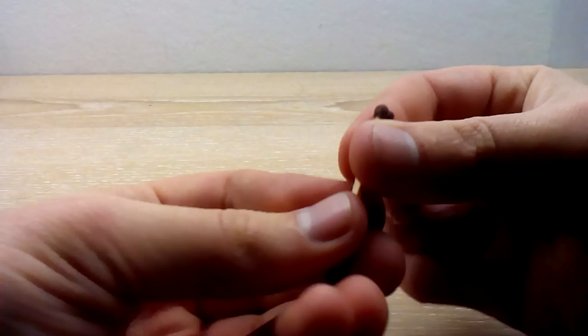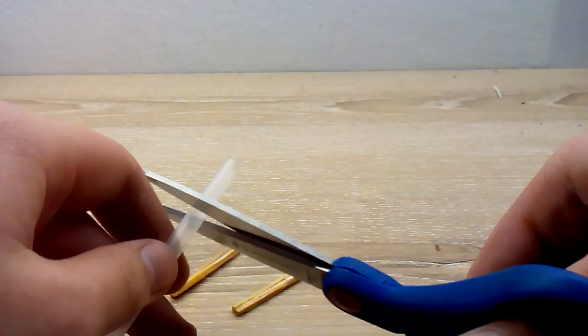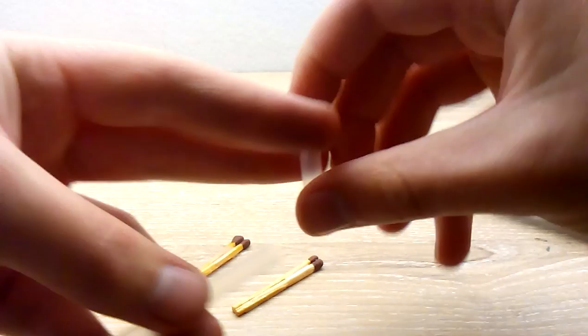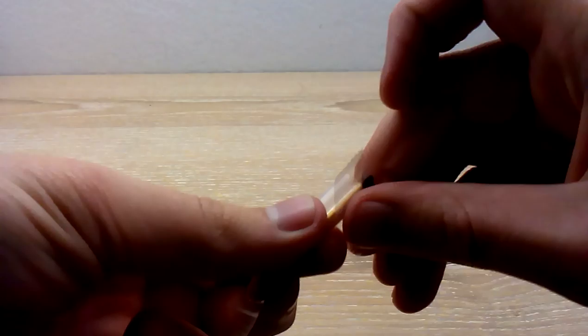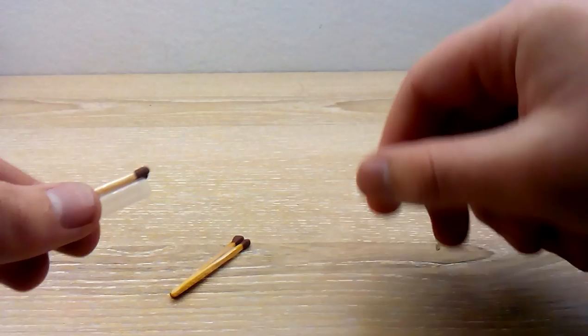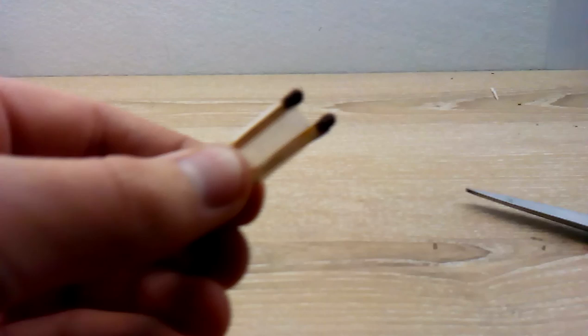Next, you cut a short length of straw, maybe between one and two centimeters long. Then you take the match and you tape it on, and you also tape on the other one like that.